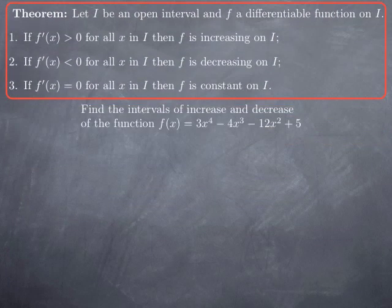We now have a simple criterion to decide, for a differentiable function, where it is increasing or decreasing. Let's apply this to a specific function — for instance, f(x) = 3x⁴ − 4x³ − 12x² + 5. We want to find the intervals of increase and decrease for that function.